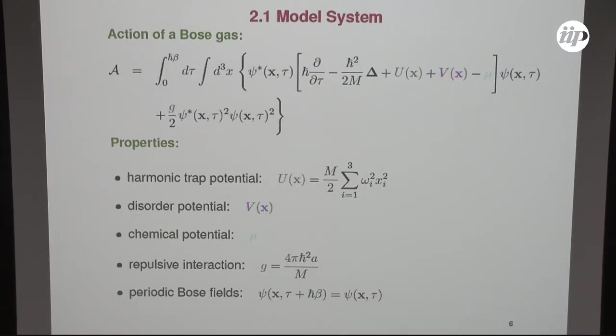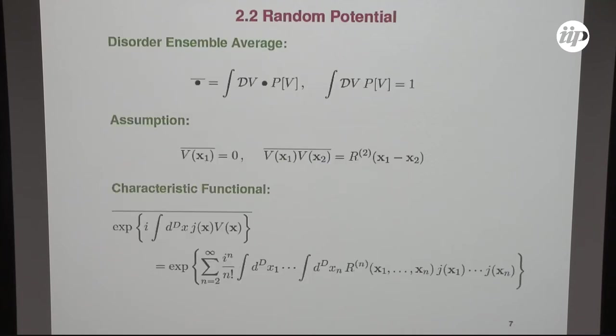Here we describe the many-body system within the functional integral approach. So the main quantity of interest here is the underlying action. We have a kinetic term, we have some trap, for instance, we have also the disorder, which is a statistical problem which I will characterize in a second. We work grand canonically, and there is a contact interaction term. And to mimic the bosonic canonical commutator relations in this functional integral formalism, you have to take into account all periodic fields which are periodic in imaginary time with the period h-bar beta.